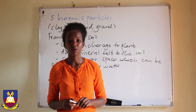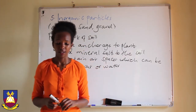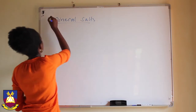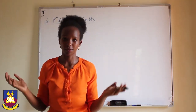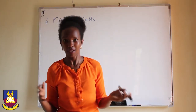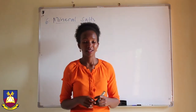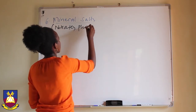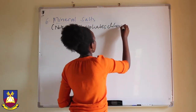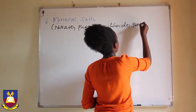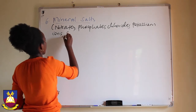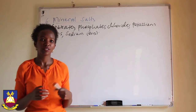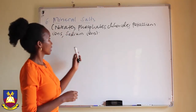The sixth component of soil is mineral salts, which include chlorides, phosphates, nitrates, iron ions, and copper ions — all found within soil. If the soil is poor in these minerals, we need to add fertilizers, because fertilizers contain those minerals.